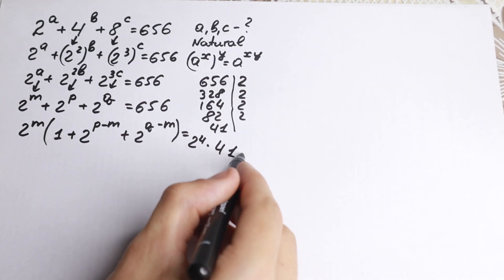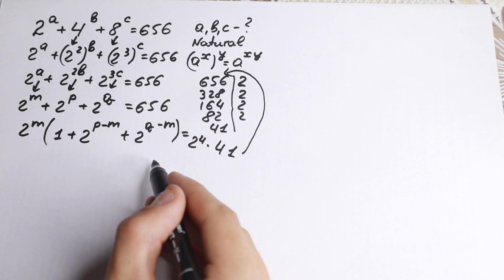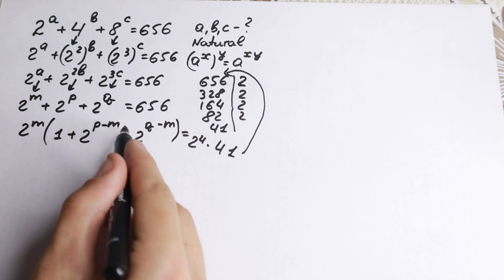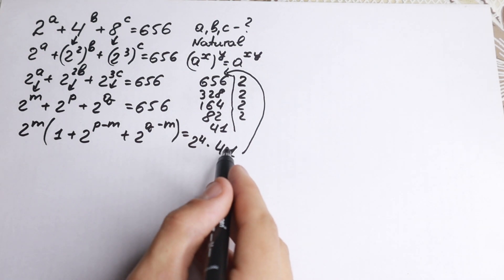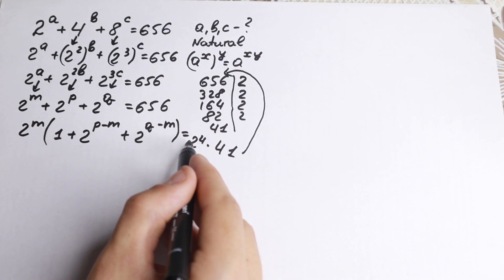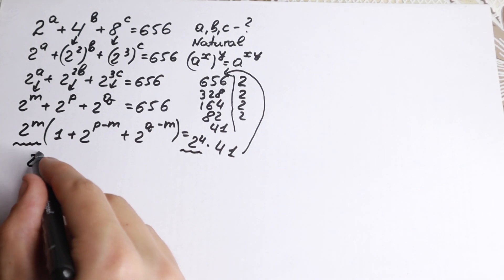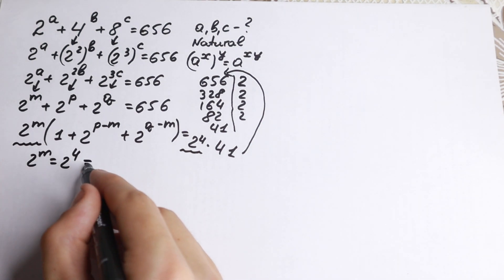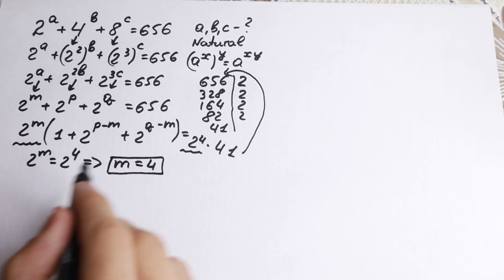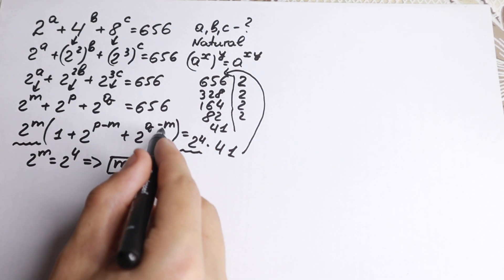This equals 656 from our factoring. Now if we look closely at our expression, we have a product of 2 to the m times a parenthetical expression on the left, and 2 to the fourth times 41 on the right — they have the same form. So we can match them: 2 to the m equals 2 to the fourth, which gives us m equal to 4. Then the remaining parentheses equal 41.